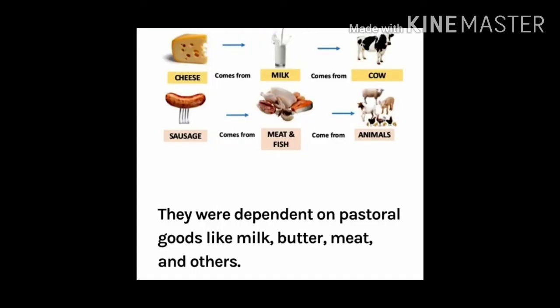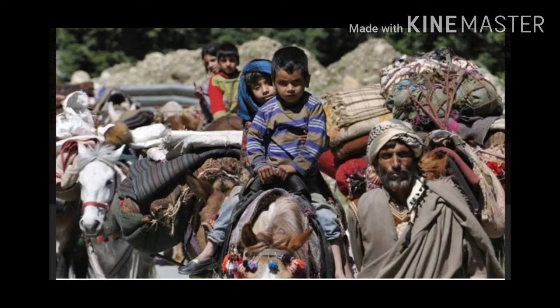They are dependent on pastoral goods like milk, milk products, meat, etc. They also exchange wool and milk products with settled agriculturists. Settled agriculturists are those people who are settled in one place — they don't move from place to place like nomads. When nomadic pastoralists move, they exchange wool and milk products with food grains like rice, and other products like clothes, utensils, etc., with settled agriculturists. They buy and sell these goods as they move from one place to another.